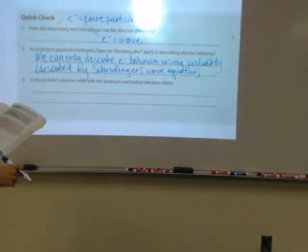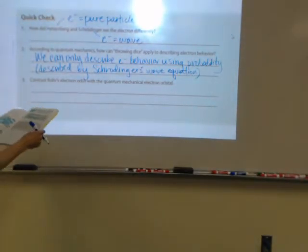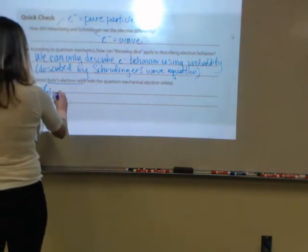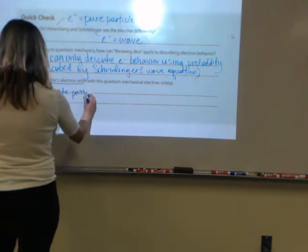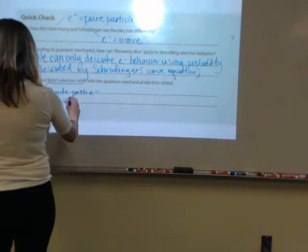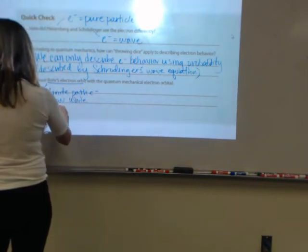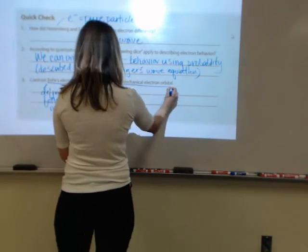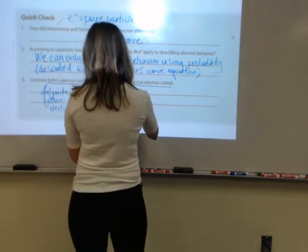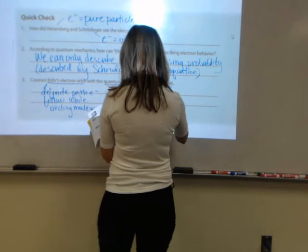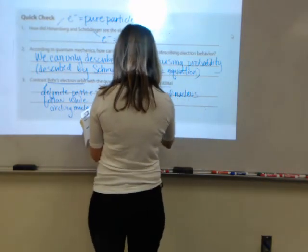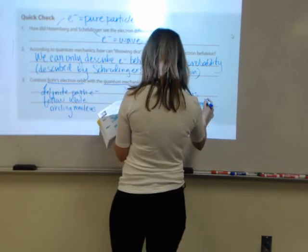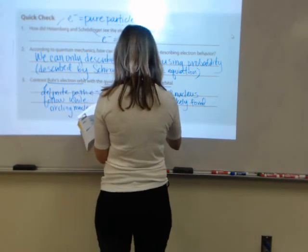Number three, contrast Bohr's electron orbit with the quantum mechanical electron orbital. So Bohr's electron orbit was saying that there was a definite path that electrons follow while circling the nucleus. The quantum mechanical electron orbital is a region around the nucleus where an electron is likely found with specific amounts of energy.